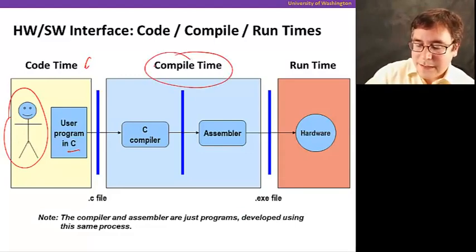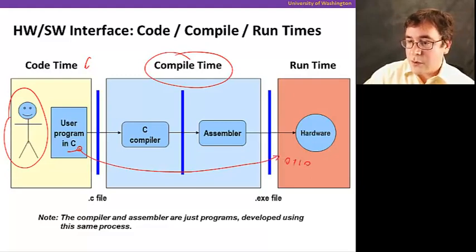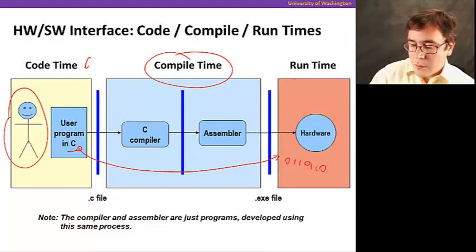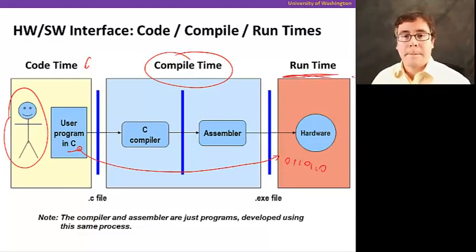Compile time is the time it takes to get your C program and generates machine code executed by the hardware. And when the hardware is executing the code, we call that runtime.